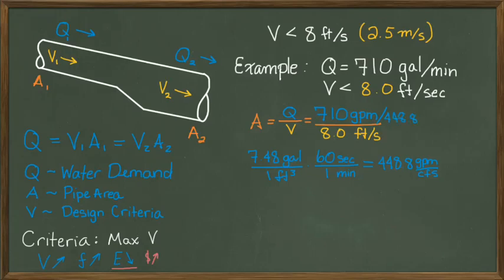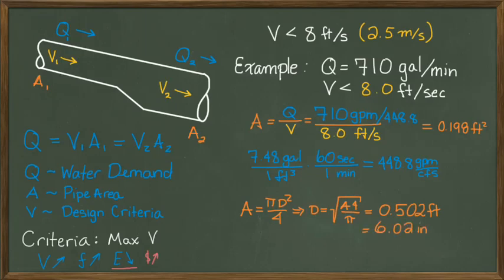Applying this to our problem gives us a minimum area of 0.198 square feet. The area of a circle is just pi d squared over 4, so solving for d gives us this expression. Inserting our calculated area, we find the minimum diameter to be 0.502 feet, or about 6.02 inches.